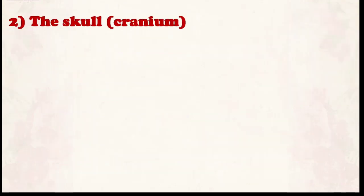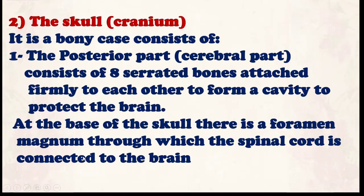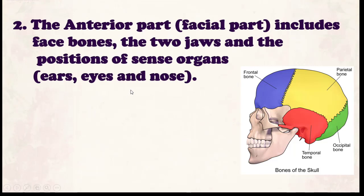Number two from the axial skeleton: the skull. The structure of the skull is called the cranium. It consists of a posterior cerebral part made up of eight serrated bones that are attached firmly to each other to form a cavity which protects the brain. At the base of the skull there is a foramen magnum through which the spinal cord connects to the brain. The anterior facial bones include the two jaws and the positions of the sense organs — ears, eyes, and nose.